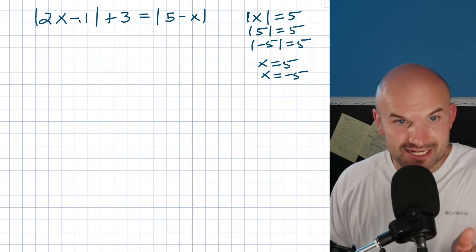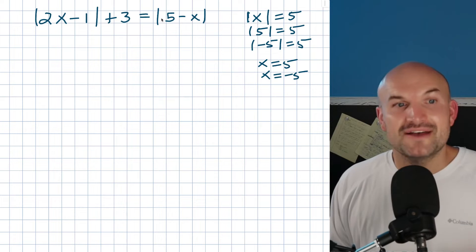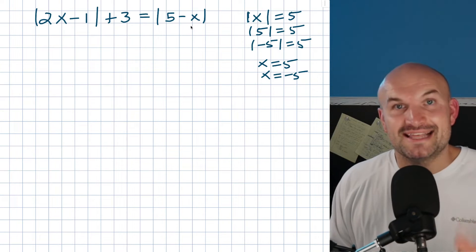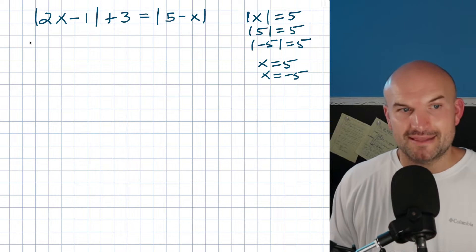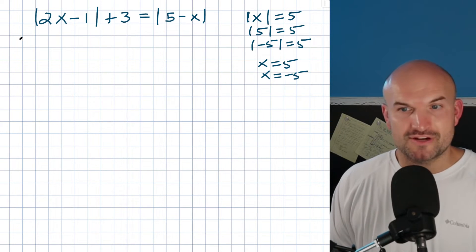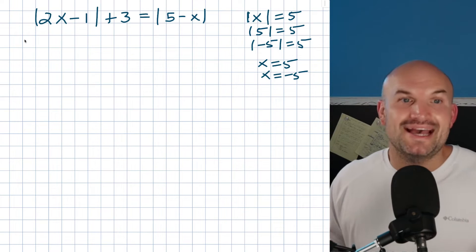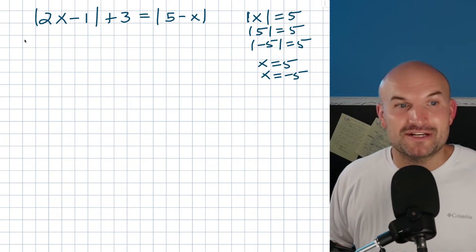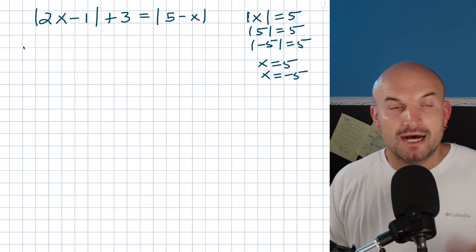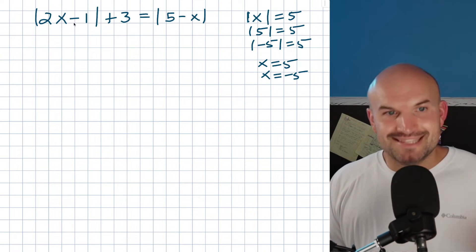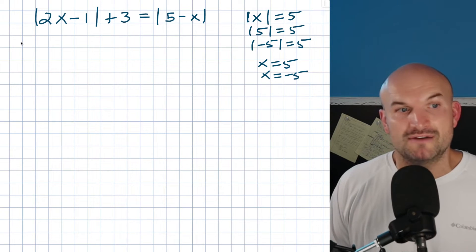The key — and where students often find this difficult — is that we have to include every single case: when the first is positive and the second is positive, when the first is positive and the second is negative, when the first is negative and the second is positive, and when both are negative. We also need to check for any repetitive or extraneous solutions to make sure our answers satisfy the original equation.